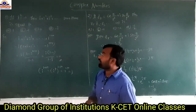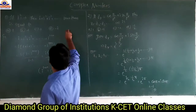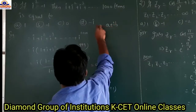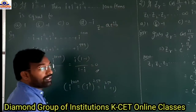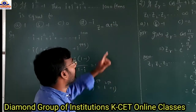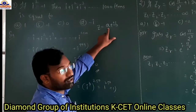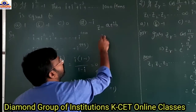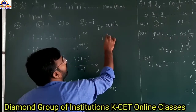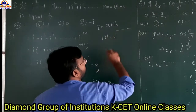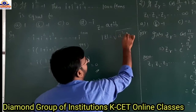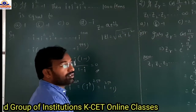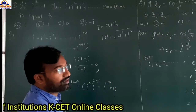Generally, complex numbers are in the form of a plus ib, which is denoted by z. So z equals a plus ib. Here a is the real part and b is the imaginary part. Next, mod z — how to calculate mod z — is nothing but the square root of the real part squared plus the imaginary part squared: mod z equals the square root of a² plus b².